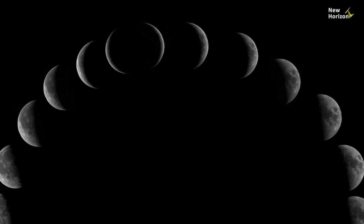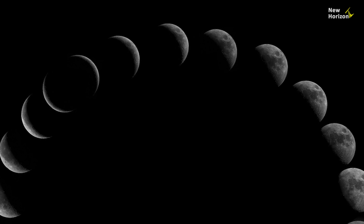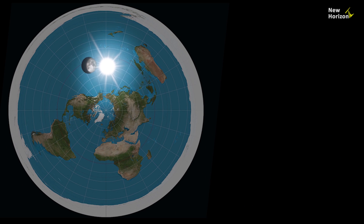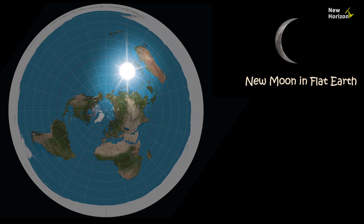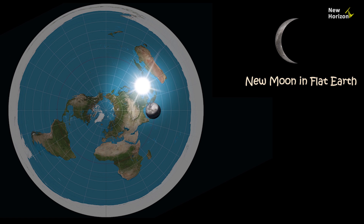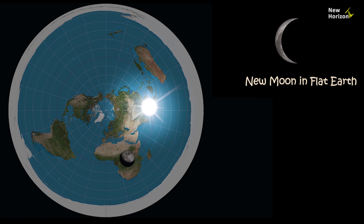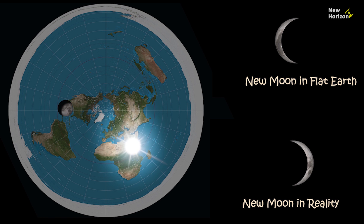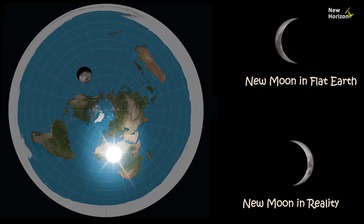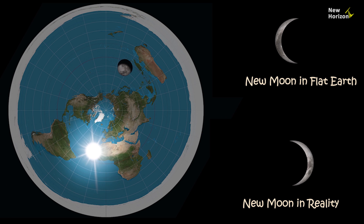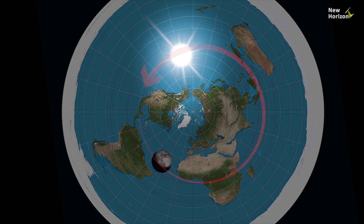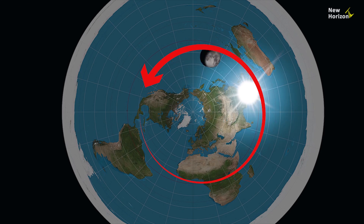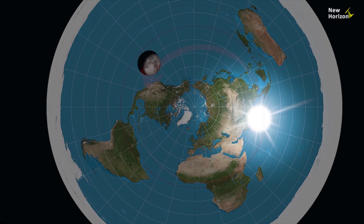It contradicts what we observe in reality. Let's consider the second scenario where the moon and sun move around the Earth at different speeds. To display the moon phases correctly as seen from Earth, we would need to adjust the direction of the moon. By changing the moon's direction, it would rise from the west and set in the east.